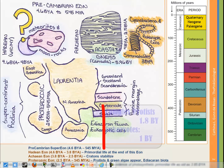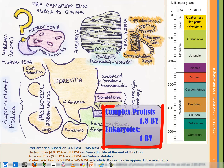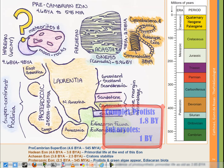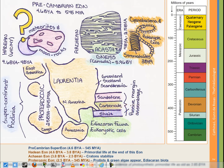The first complex single-celled protists appear about 1.8 billion years ago. The first trace fossils of eukaryotic life — and this is in some dispute — are thought to be about a billion years old. These represent complex, multicellular, nucleated-cell type life.